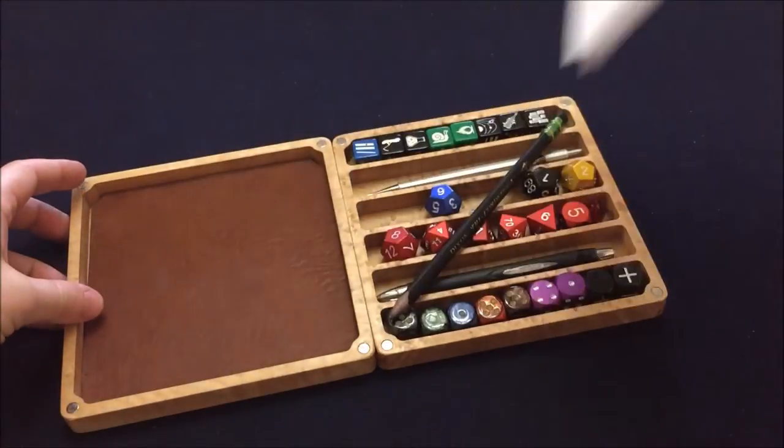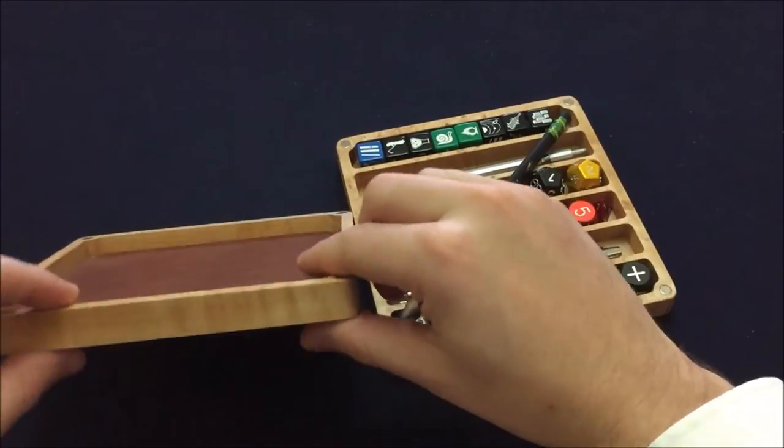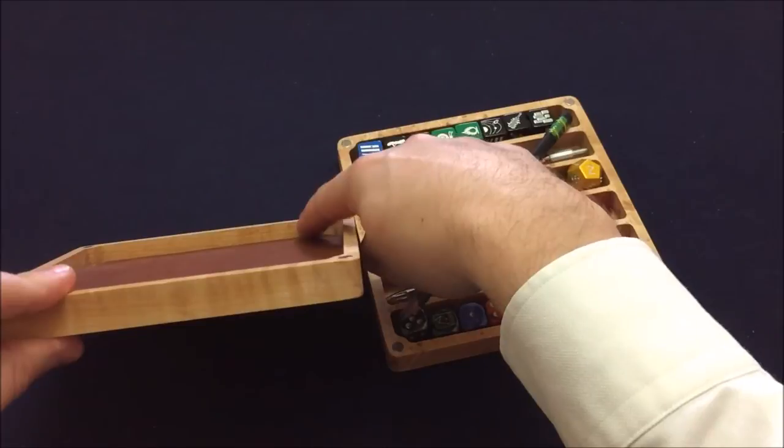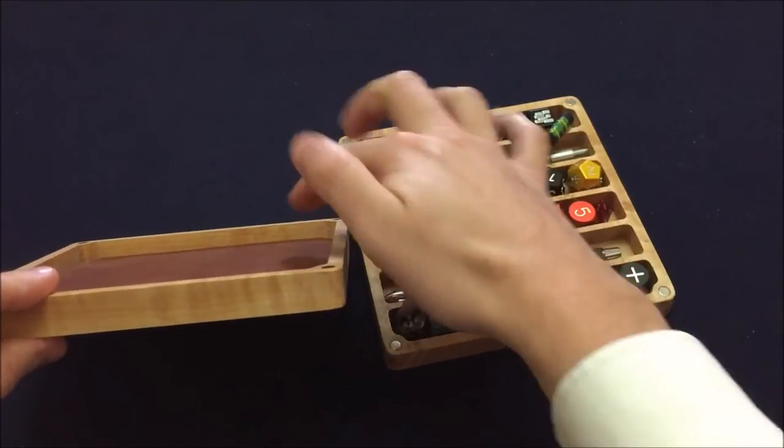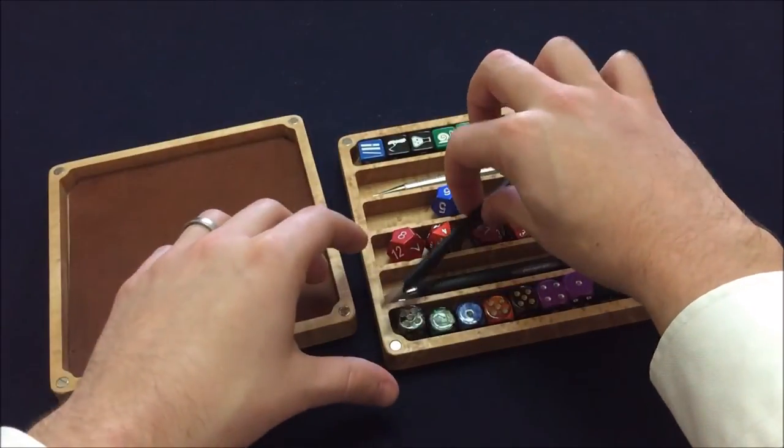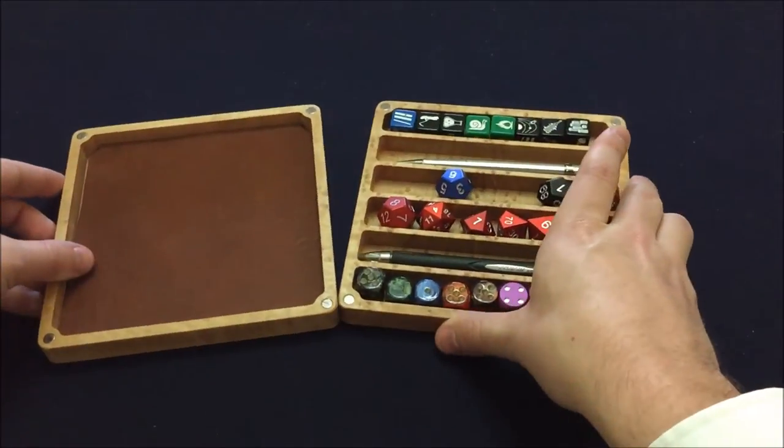Again the only reason something would come out of place is if it's thinner than this is because these dividers go up as high as this does. So you have to be a pretty small piece for it to come loose when you're carrying it around.